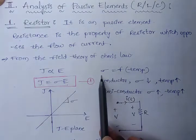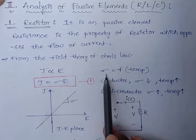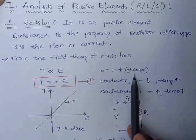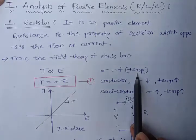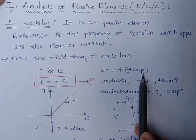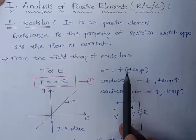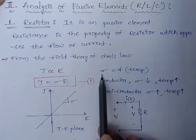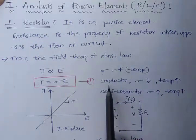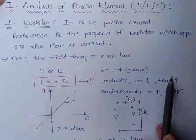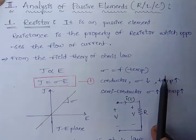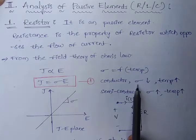Now, sigma is conductivity which is a function of temperature — as temperature changes, sigma also changes. In the conductor's case, if temperature increases, the conductivity of the conductor decreases.